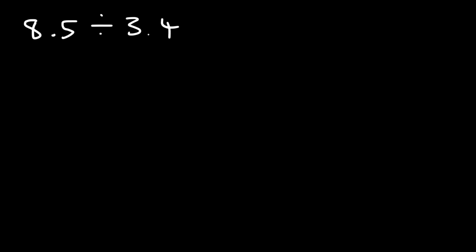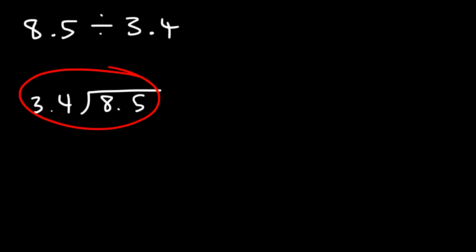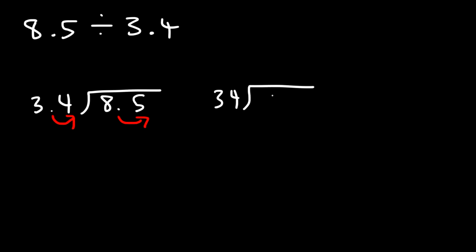In this video we're going to talk about how to divide decimal numbers. Let's start with this example: what is 8.5 divided by 3.4? We need to set it up so that 3.4 is the divisor and 8.5 is the dividend. Rather than doing long division right away, let's adjust this expression by moving the decimal point one unit to the right for both numbers. It turns out that 85 divided by 34 is the same as 8.5 divided by 3.4.